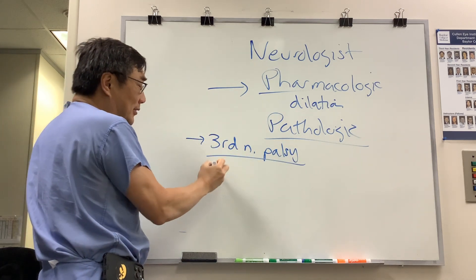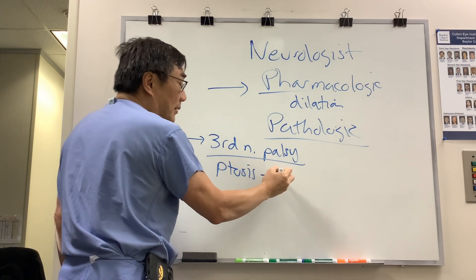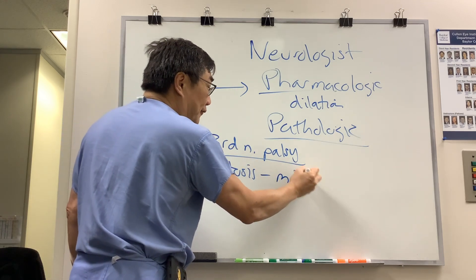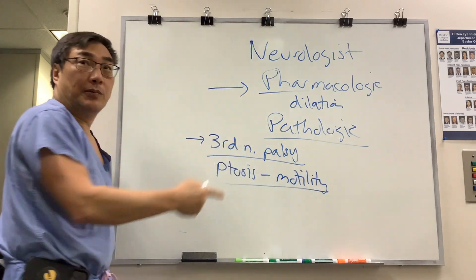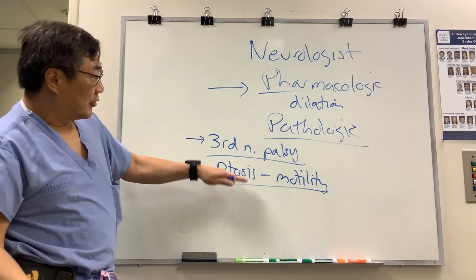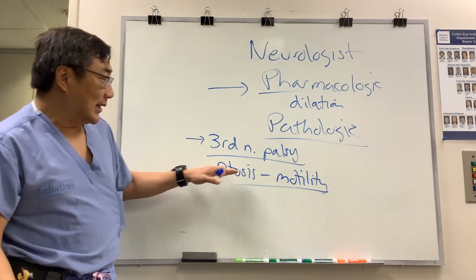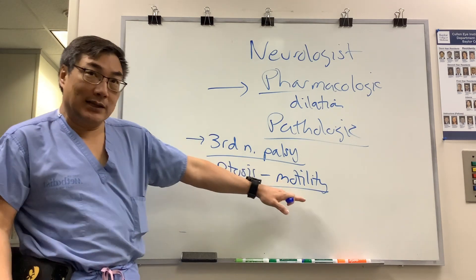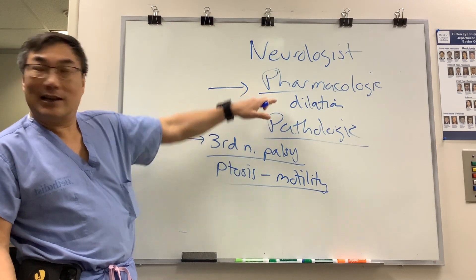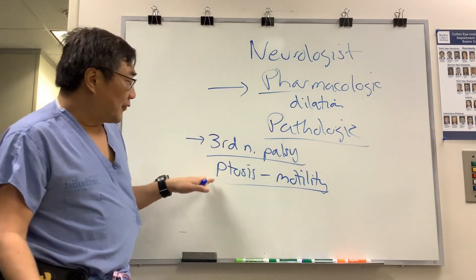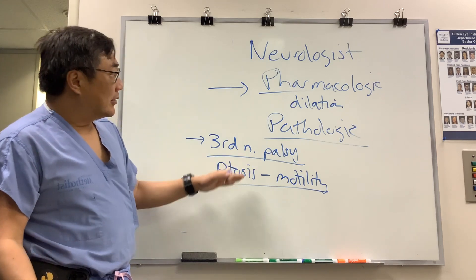With a third nerve palsy, you're going to have ptosis and a motility deficit. So your first job as a neurologist with any dilated pupil is to make sure it's not a third — that means you look at the lid and the motility. If the lid and the motility are involved, that's not pharmacologic dilation, that's a third nerve palsy. The first thing is the exam.